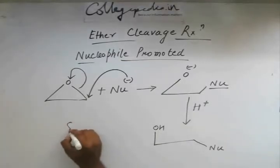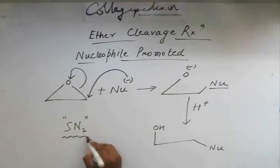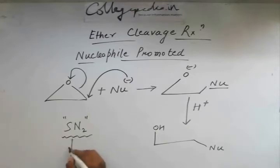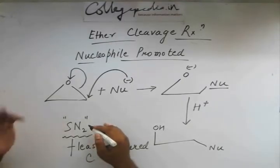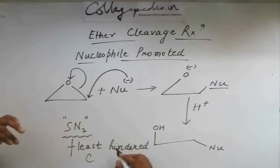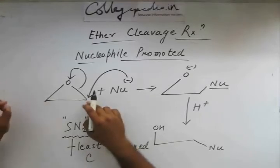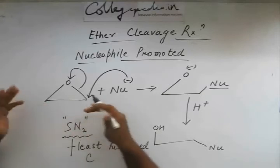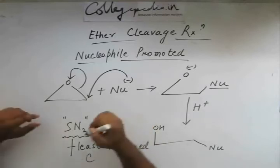One important point to keep in mind is that this is an SN2 reaction. SN2 reactions are favored at the least sterically hindered carbon, so the nucleophile will attack the carbon which is least sterically hindered. In this symmetric case, both carbons had two hydrogen atoms attached to them, so attack on either carbon gives the same end product.